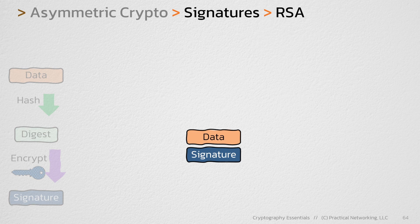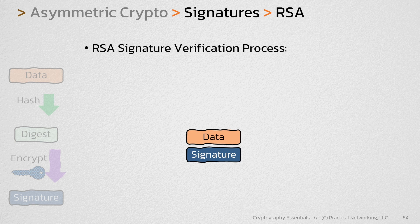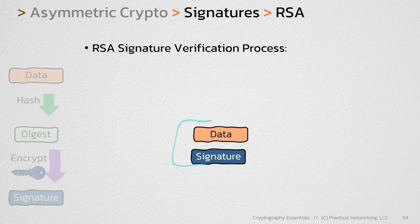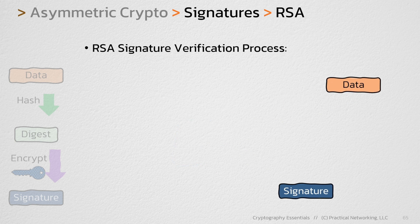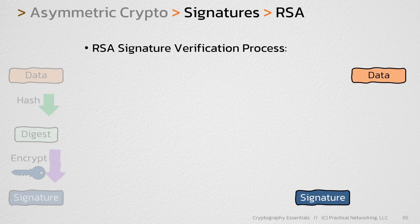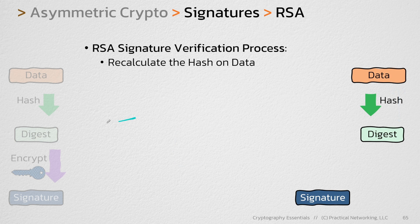Now let's talk about how you would verify the signature. The signature verification process looks like this. You would take the data and the signature and separate them out. Then you would take that data and run it through the same hashing algorithm that was used earlier when we created the signature. That's going to produce some sort of digest.